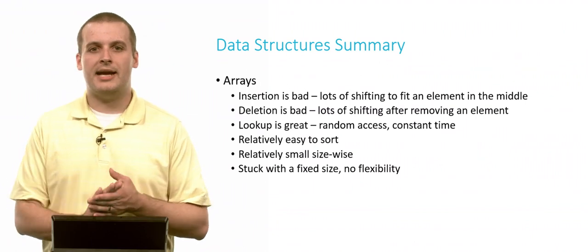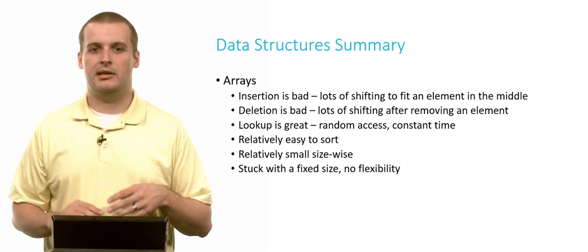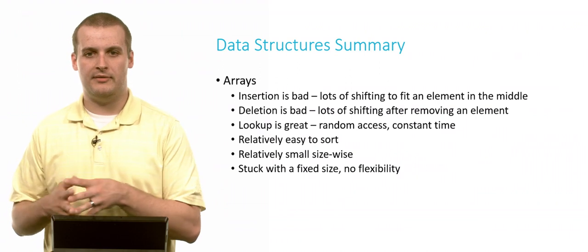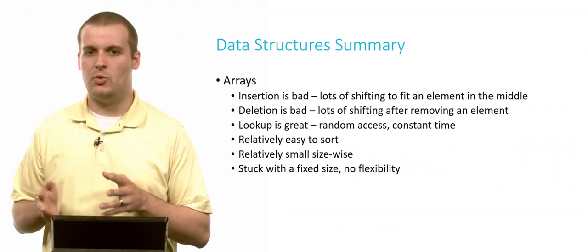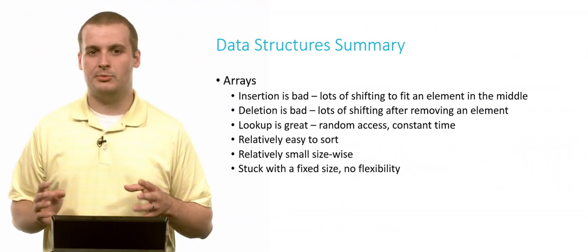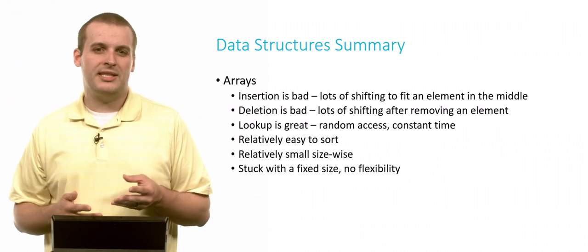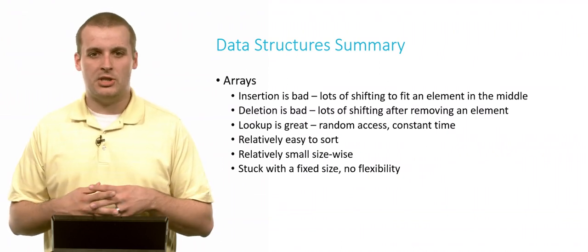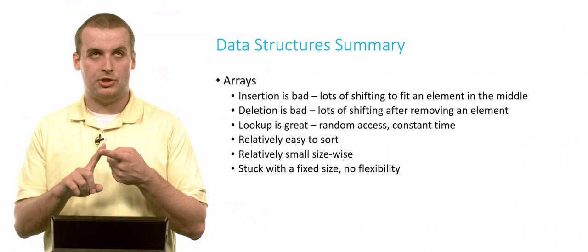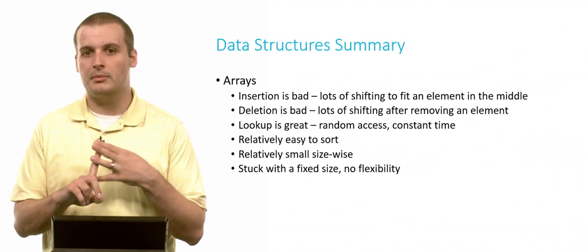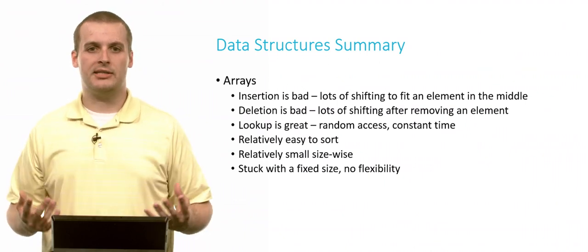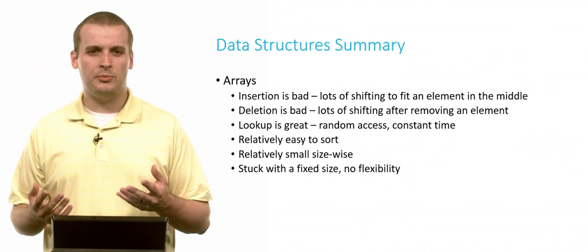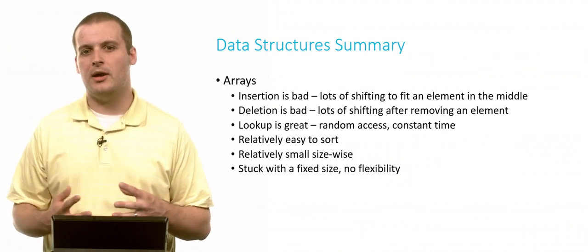Lookup, though, is great. We have random access constant time lookup. We just say 7 and we go to array location 7. We say 20, we go to array location 20. We don't have to iterate across. That's pretty good. Arrays are also relatively easy to sort. And every time we talked about a sorting algorithm, such as selection sort, insertion sort, bubble sort, merge sort, we always used arrays to do it because arrays are pretty easy to sort relative to the data structures we've seen so far.